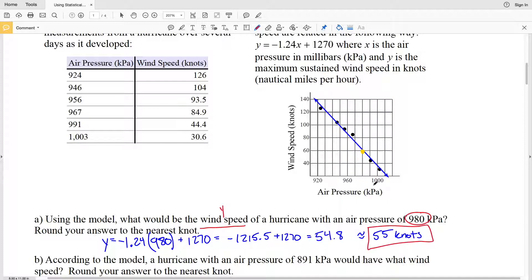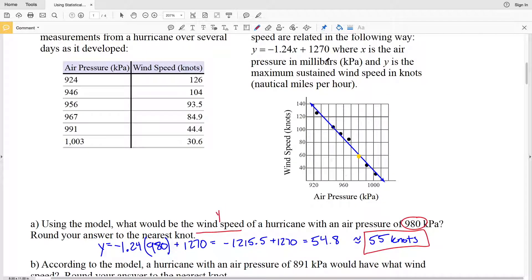When we're at 980 in our X, we're at approximately 55 in the Y. If we did not have this line of best fit formula, we would use our graph and guess that it would be around 60 because that's where it looks like that dot would fall on that line. However, since we were given that equation, we were able to plug in our X value and solve for Y.